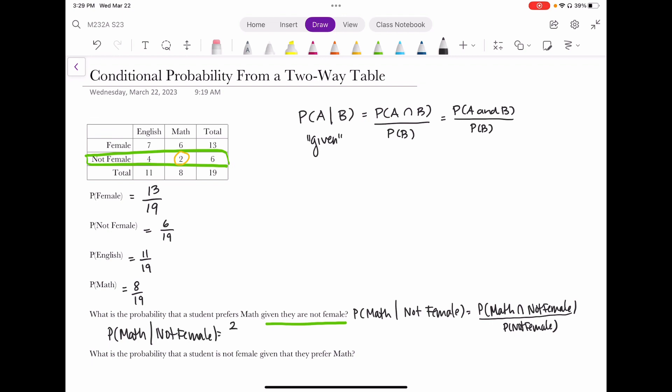...is equal to two out of the six not females total. That simplifies to one third. Now, again, I said that you could use a formula.